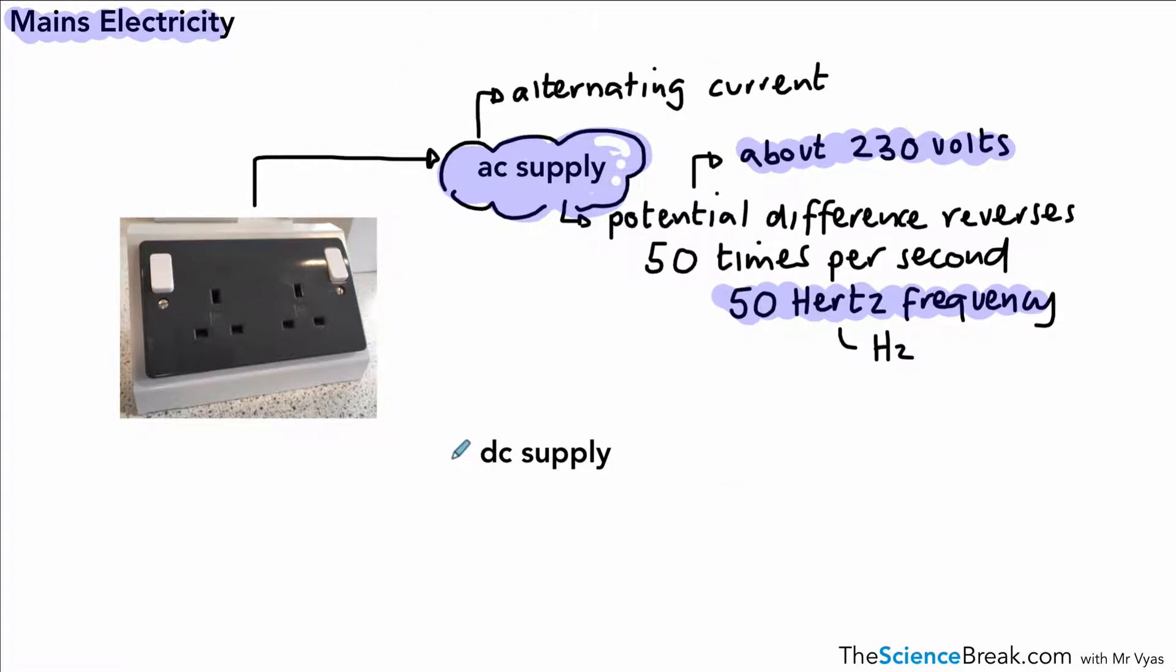Now when we're talking about something different, which is our DC supply. So DC stands for direct current. And this is current that flows in one direction only. And it's provided by a cell or a battery. Remember, a battery is two or more cells together. And some appliances will actually convert AC into DC as well.